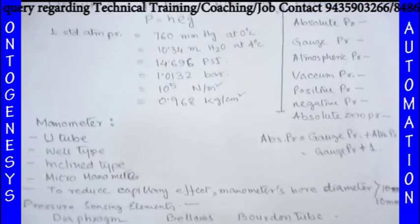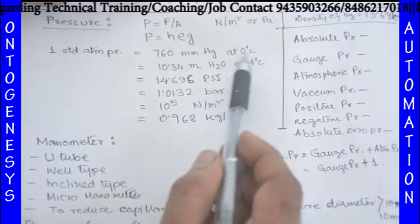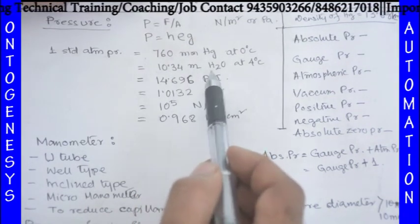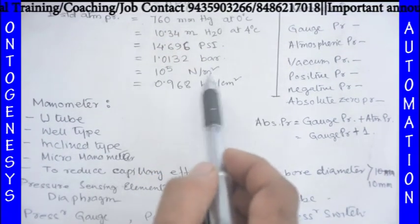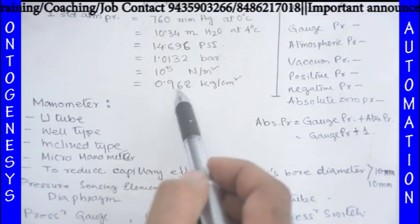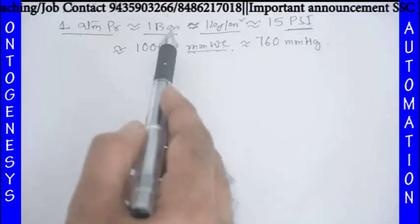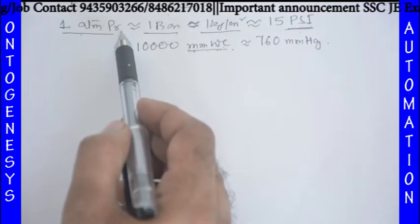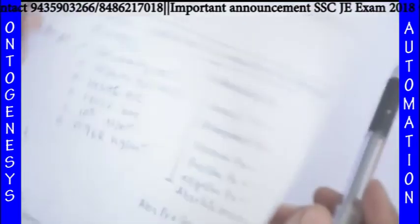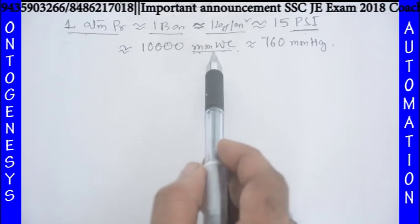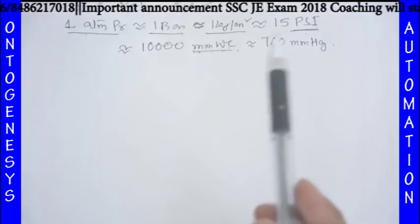Here are the actual values — kindly note them down. One standard atmospheric pressure equals 760 mm of Hg at 0°C; 10.34 meter H₂O at 4°C; 14.696 psi; 1.0132 bar; 10⁵ Newton per meter square (Pascal); and 0.968 kg per centimeter square. From this chart we can see that atmospheric pressure, bar, and kg per centimeter square are almost the same, with a fractional difference, and approximately 15 psi and 10,000 mm of WC.